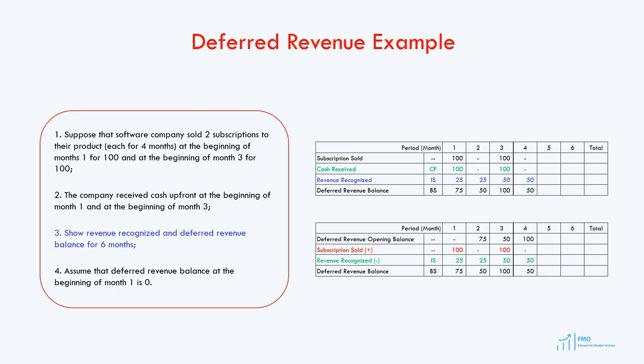In the fifth month, no subscriptions were sold, so subscription sold and cash received are zero. Revenue recognized drops to $25 because the first subscription has now been fully recognized — we recognized $25 in months 1, 2, 3, and 4, so no revenue remains for the first subscription. Only $25 remains from the second subscription sale. In auxiliary calculations, opening balance is $50, subscription sold is zero, revenue recognized is $25, giving a deferred revenue ending balance of $25.